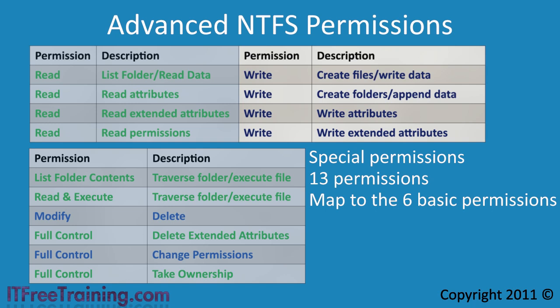The last permission under write is write extended attributes, which allows the user to change extended attributes set by programs. The next basic permission is list folder contents, which is only available at the folder level. This permission sets the traverse folder permission and the 4 read permissions. The traverse folder permission allows a user to go through directories even if they don't have access to them.